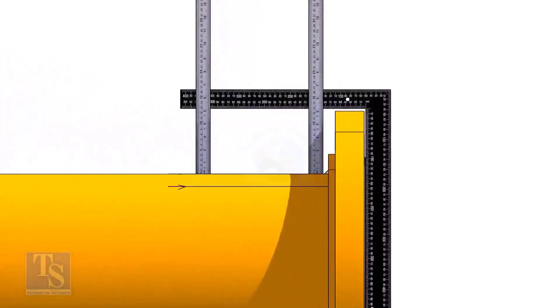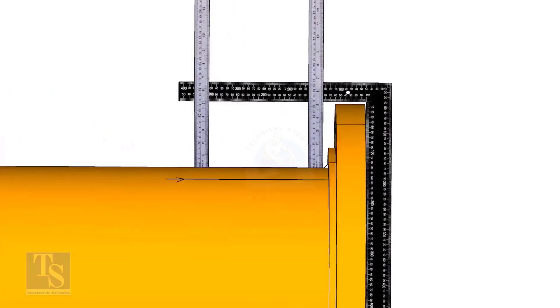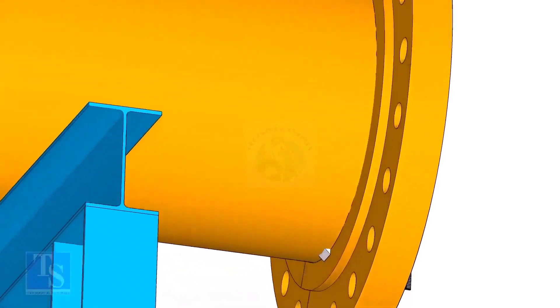Tack weld on the top of the pipe with the flange and check the squareness. If correct, tack weld at the bottom side also.